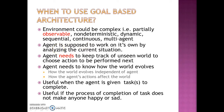The agent in this case is supposed to work on its own by analysing the current situation and is not supposed to wait for a reflex to come and then trigger an action. The agent needs to keep track of the unseen world to choose the action to be performed next. It has information on the model — how the world evolves independent of the agent and how the agent's actions affect the world. This kind of agent architecture is useful when the agent is given a task or tasks to be performed.